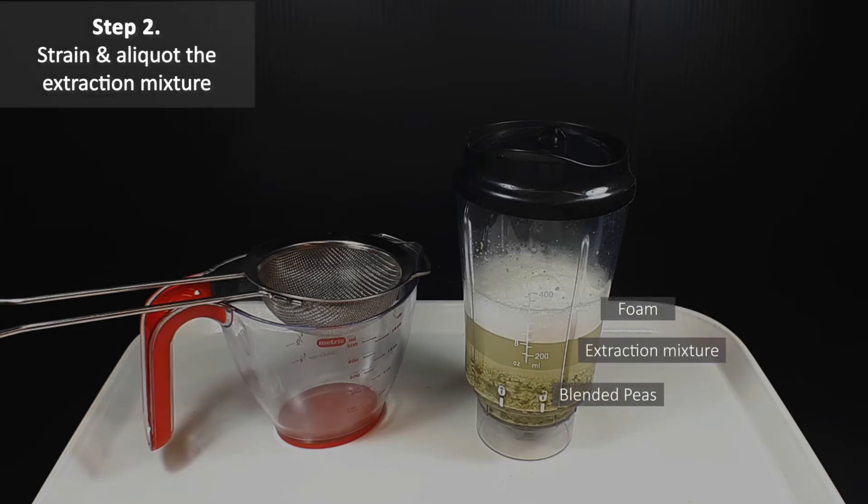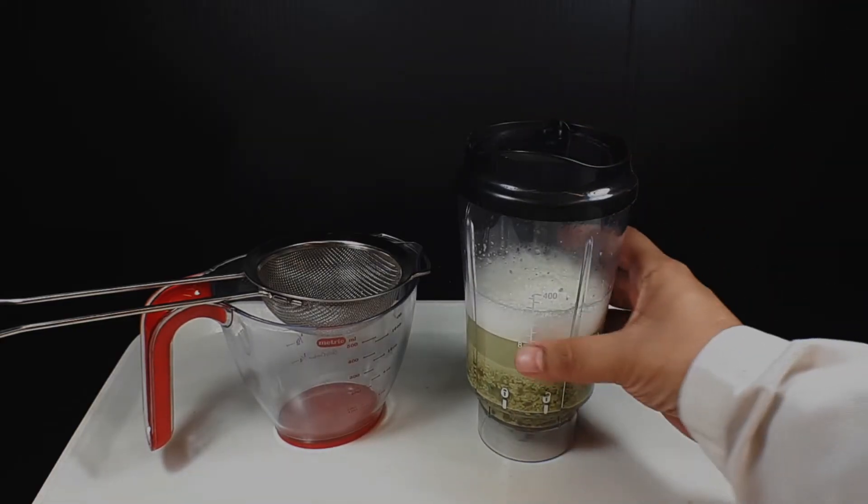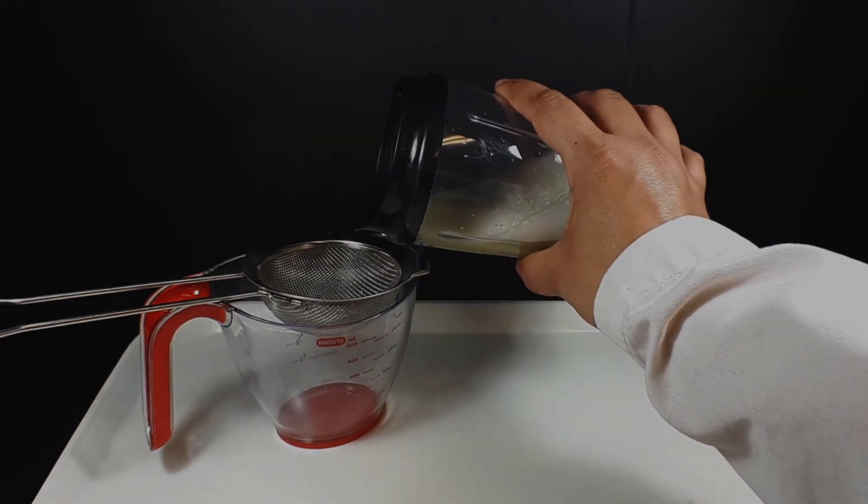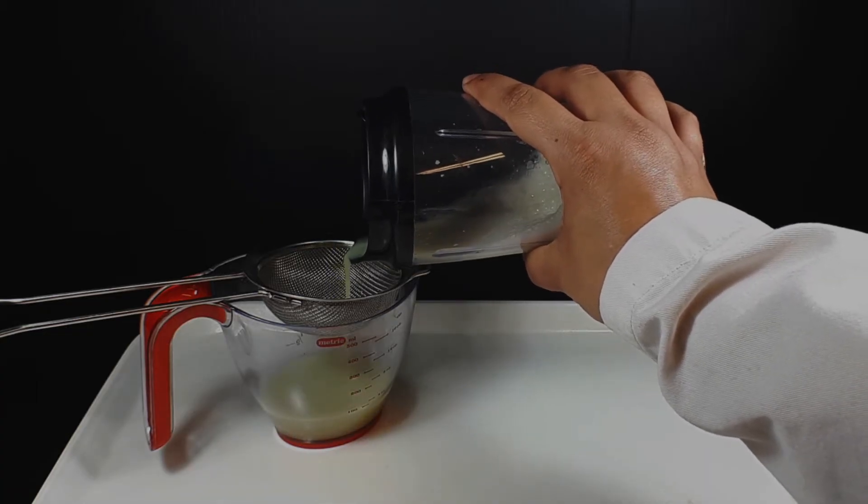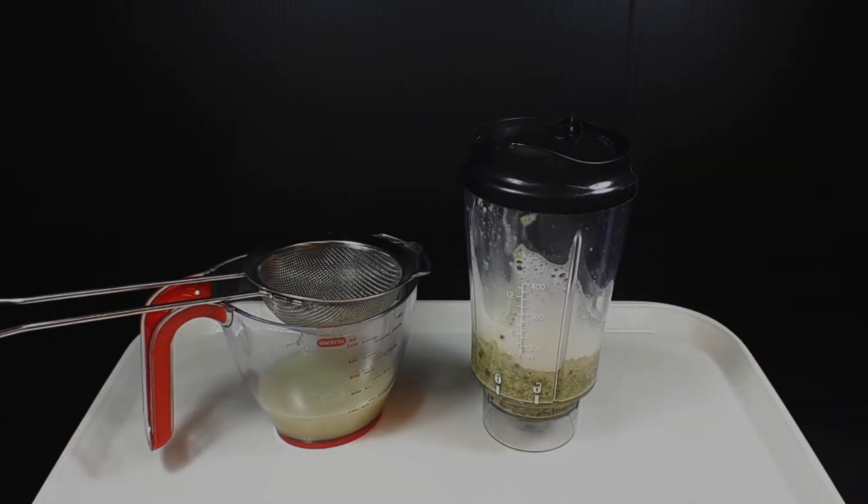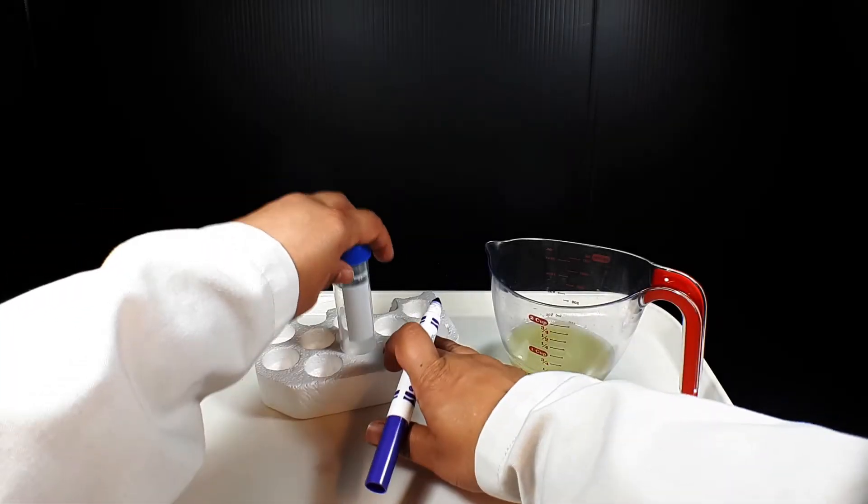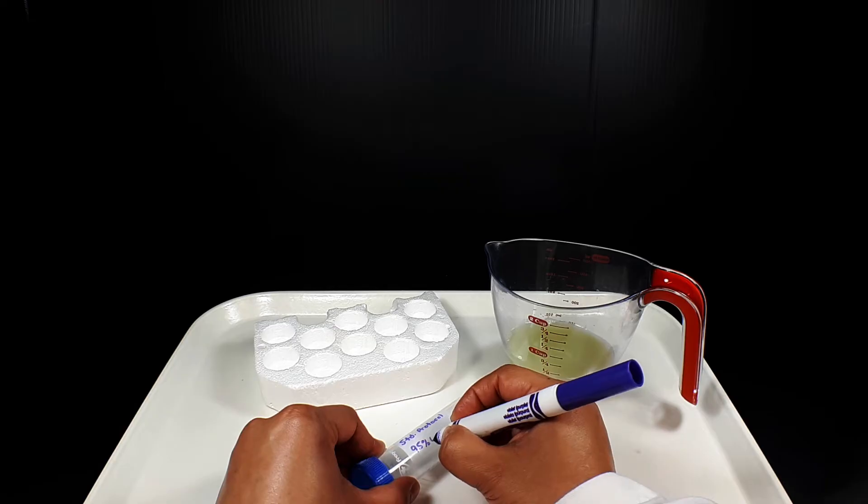After blending you'll notice the chopped up split peas on the bottom, a watery greenish layer in the middle, and a foamy layer on top. For our DNA extraction we only want that watery greenish layer in the middle. So our next step is to carefully strain the extraction mixture, leaving the foam and the chopped up split peas behind. Now we can label our tubes and aliquot 15 milliliters of the strained liquid.